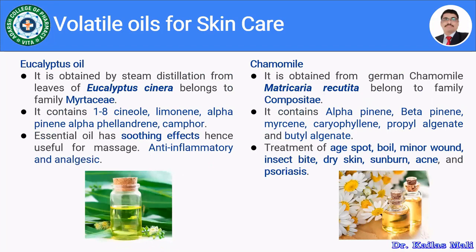The next volatile oil is eucalyptus oil. Eucalyptus oil is obtained by steam distillation from leaves of Eucalyptus cinerea belonging to family Myrtaceae. It contains mainly 1,8-cineol, limonene, alpha-pinene and alpha-phellandrene. The essential oil of eucalyptus shows a soothing effect on the skin and is used for massage. It also has anti-inflammatory and analgesic activity. Some cosmetics related to the skin contain eucalyptus oil.